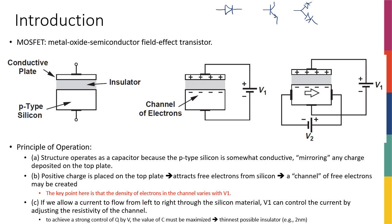In BJTs the current-voltage relationship was exponential; here with MOSFETs you'll see it's quadratic. But at the end of the day there are a lot of similarities, so we're going to move much faster with MOSFETs. In chapter 7 you'll see that even in the amplifier circuits, when calculating gain, input impedance, and output impedance, the approach is about 80-90% similar. If you learned chapters 4 and 5 well, you're going to do really well in chapters 6 and 7.